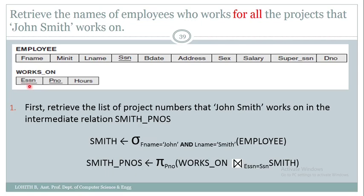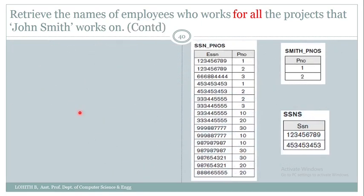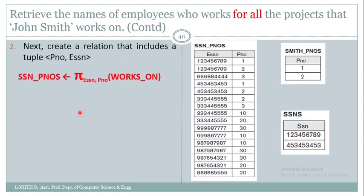Now I need to retrieve the ESSN and project number columns from works-on. I retrieve ESSN and project number from works-on using a pi operation, naming the result appropriately. This gives the ESSN and project number of all employees. I then perform a division operation between these two relations — the ESSN and project number of all employees divided by the project numbers of John Smith.